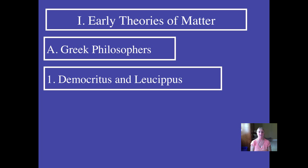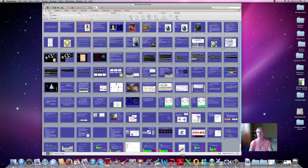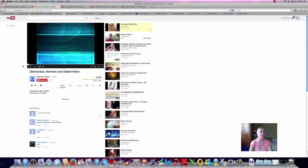We'll start in ancient Greece. Leucippus and Democritus are the Greek philosophers who theorized the existence of the atom. The word came from the Greek word atomos, which meant uncuttable. Beyond postulating that there was this uncuttable basic unit of structure, that was it. Leucippus was the teacher, Democritus was his student. It was more of a philosophical argument at the time. We'll take a short break to watch a quick YouTube video about Democritus, stopping at about two minutes in.